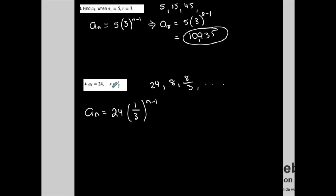It doesn't ask me for a particular term number, but once I know the nth term in explicit form, if I want to find the fifth term, for example, I could plug in 5 into my n. I would use my calculator for this. So 1 third raised to the fourth power and then times 24 in fraction form is equal to 8 over 27.